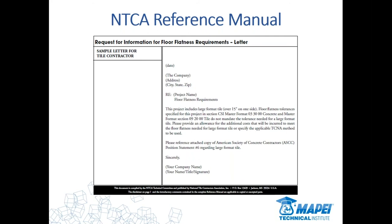There is a position statement in the NTCA reference manual on Division 3 versus Division 9 floor flatness tolerance. This is a great resource that contractors are often not aware of. If you're not a member of the NTCA, that's something you should certainly look into. Take a look at the reference manual — this is all to help contractors understand their rights and what needs to be done prior to their arrival.